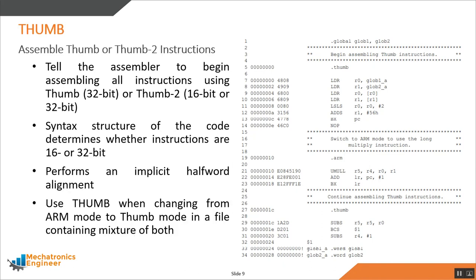If you want to program in Thumb assembly language instruction mode, which is 16 or 32-bit wide, you need to use the Thumb assembler directive. The Thumb directive tells the assembler to begin assembling all instructions using Thumb — which is 32-bit — or Thumb 2, which is 16 or 32-bit long instructions. The syntax structure of the code determines whether instructions are 16 or 32-bit wide. The Thumb mode also performs an implicit half-word alignment. If you are using both Thumb and ARM mode in a single file, use the Thumb directive when switching from ARM mode to Thumb mode.